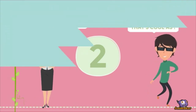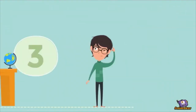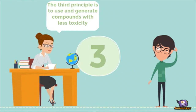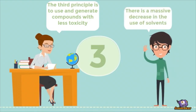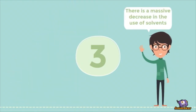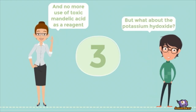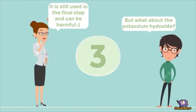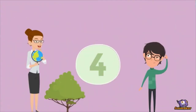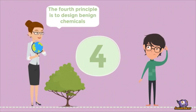The third principle is to use and generate compounds with less toxicity. There is a massive decrease in use of solvents and no more use of toxic mandelic acid as a reagent. However, potassium hydroxide is still used in the final step and can be harmful.